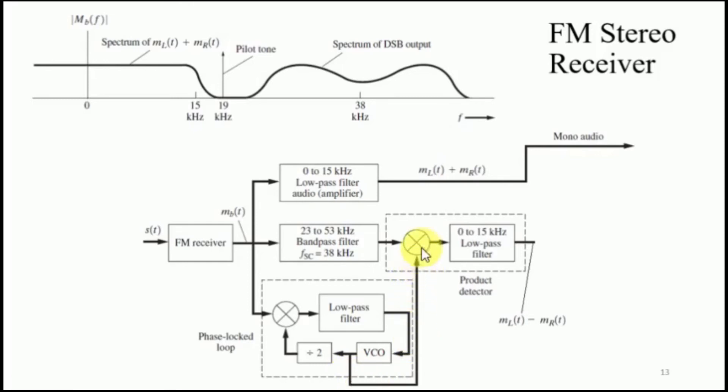This 38 kHz is fed to the multiplier also fed to this part of the signal. Eventually whole of this spectrum would be shifted because of this multiplier from 38 to base band at 0. You would have simply ML of t minus MR of t at this output after using low pass filter.